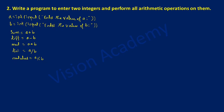Now let us go for printing all of these. I am going to write a print statement — print, then in double quotation marks write 'addition is equal to', end the double quotation mark, put a comma, and then sum is the variable holding the actual value. Next I am going to write the print statement for difference — print, write 'difference is equal to', end the double quotation mark, put a comma, and then write diff.